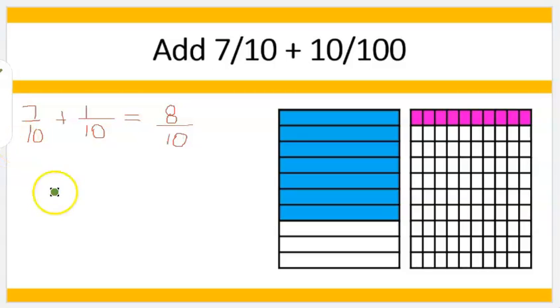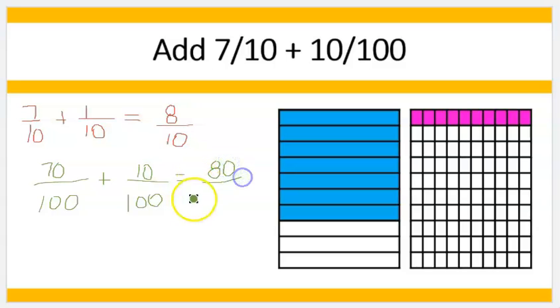But if I want to add it and convert these numbers to one hundredths, seven tenths would really become 70 one hundredths. See how the blue rectangles would make up the same area as 70 of my 100 boxes? So I could say 70 one hundredths plus 10 one hundredths equals 80 one hundredths. And of course, 80 one hundredths equals eight tenths.